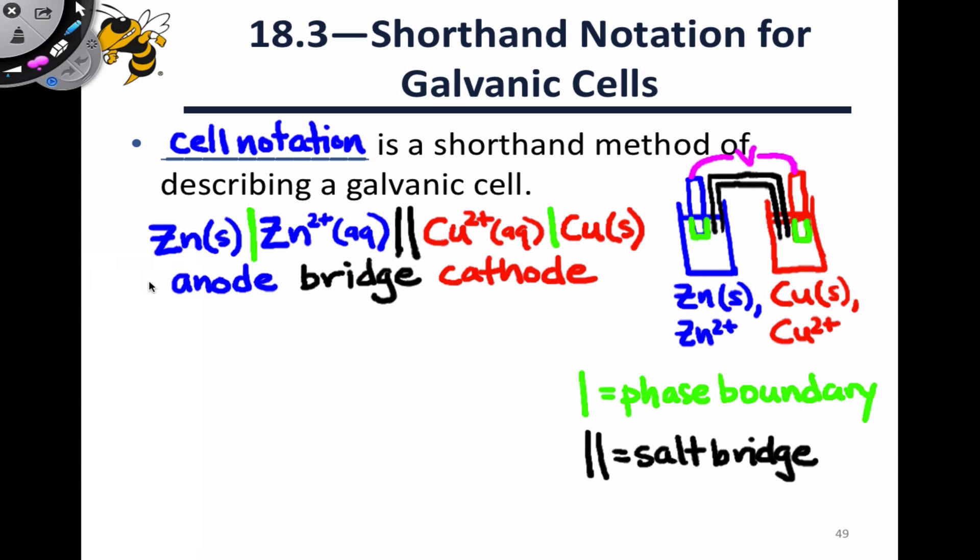We always write cell notation in the form anode-bridge-cathode, and this has a convenient effect on the direction of electron flow within the notation. We can always imagine electrons flowing from left to right through the cell notation. That is, from the reducing agent on the left-hand side to the oxidizing agent on the right-hand side of the cell notation.